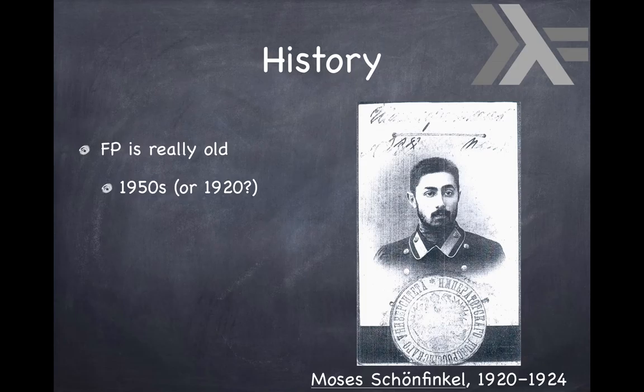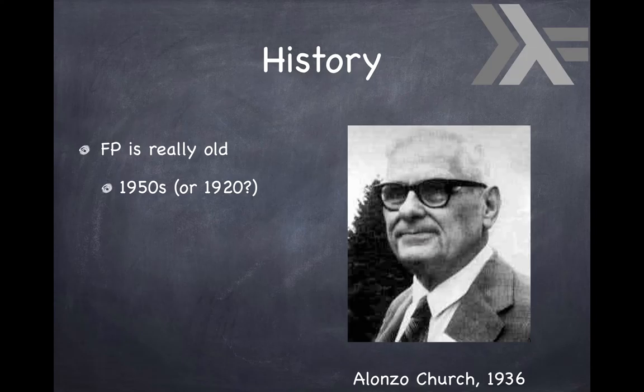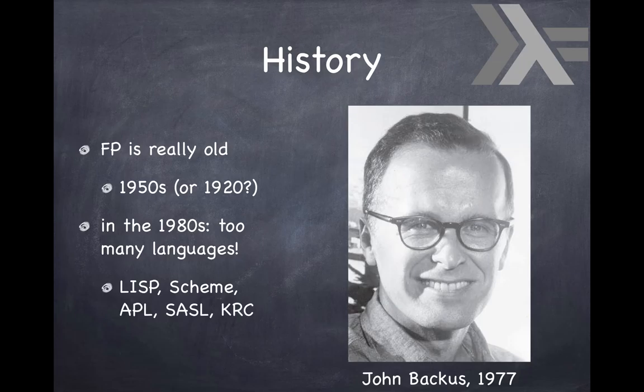If you talk about the 20s, this is Moses Scheinfinkel, who was a student of David Hilbert, one of the greatest mathematicians of that era. Scheinfinkel came up with combinatorial logic and started working on the topic, but unfortunately after a couple of years he lost his mind and ended up in a madhouse. There were other people who continued that line of research, one of them being Alonzo Church, who proved quite a lot of stuff around that.